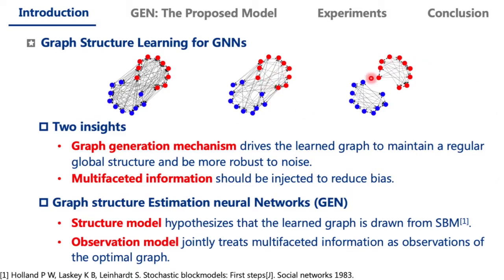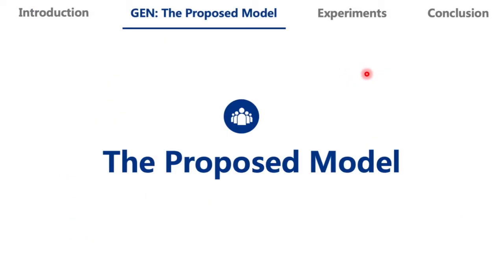Furthermore, we present an observation model to jointly treat the observed graph, node feature similarity, and multi-order neighborhood similarity as observation of the optimal graph. Next, I'll introduce the details of the proposed model.